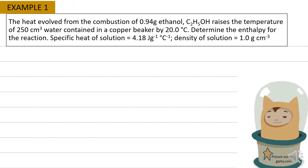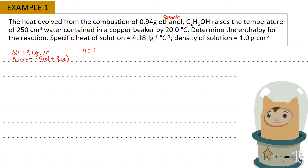We need to find delta H, where delta H equals Q-reaction divided by number of moles, and Q-reaction equals negative of (Q-solution plus Q-calorimeter). First, find N for the sample. The sample here is ethanol: 0.94 gram divided by the molar mass 46, giving N equals 0.02 mole.